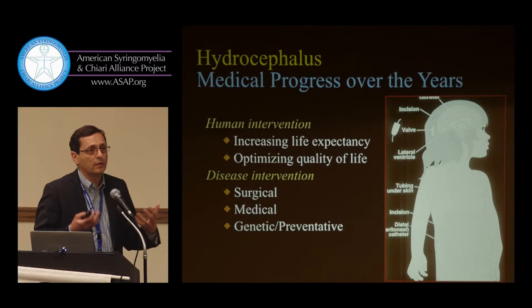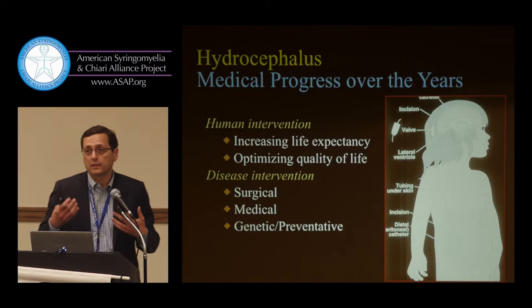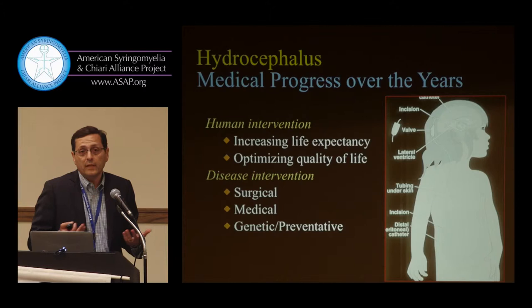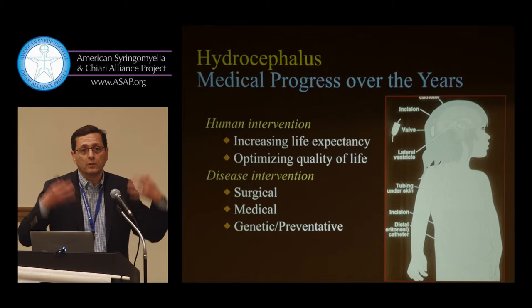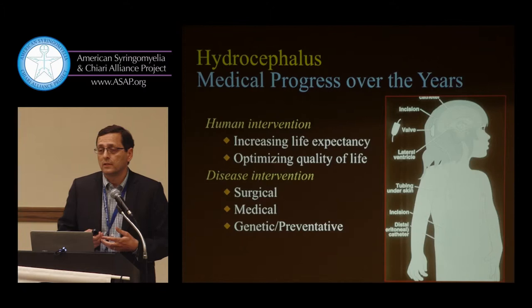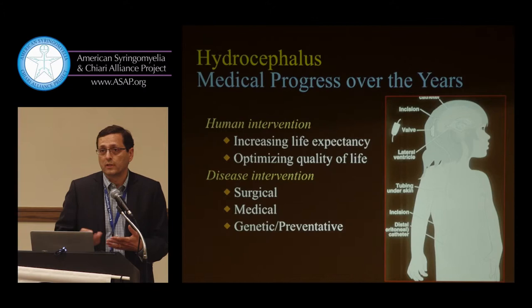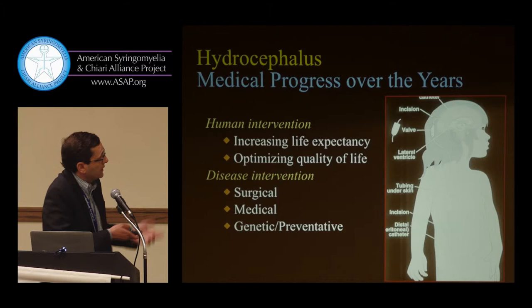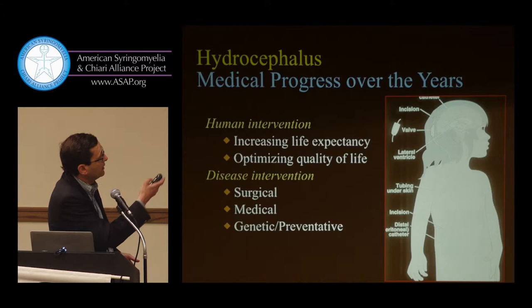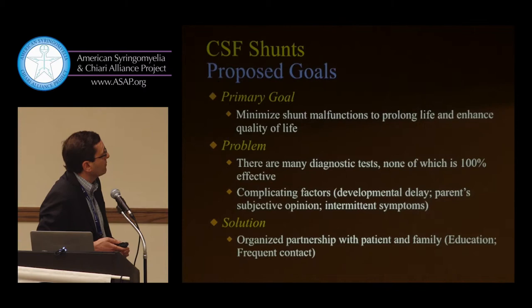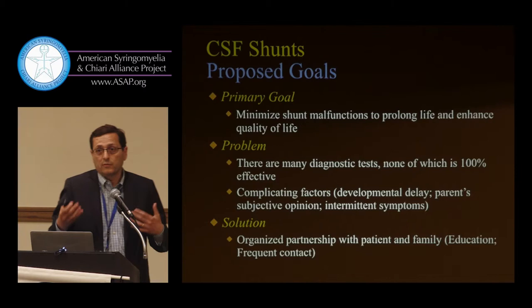Over the years, the initial goal of shunting was to save the lives of kids with hydrocephalus who would eventually have neurological deterioration and possibly die. That was accomplished 50–60 years ago. What remains, however, is a set of very complicated children whose brains have been shunted abnormally for years and years, and they develop a variety of problems because of what we do. Now the goal is to optimize their survival, not just save their lives. This is a shunt: a catheter goes into the brain ventricle, there's a one-way valve, and it drains to either the abdomen, chest, or other places.